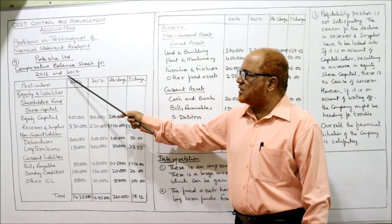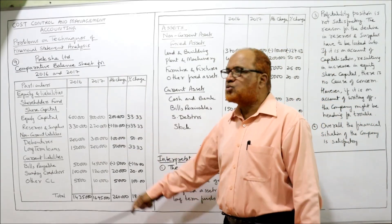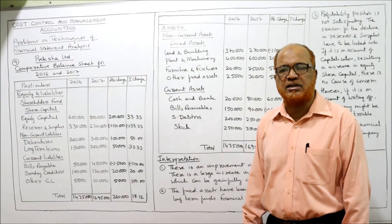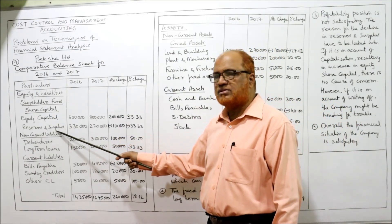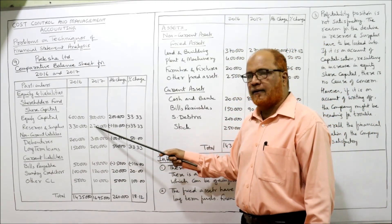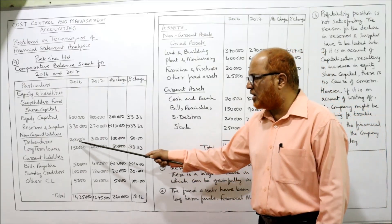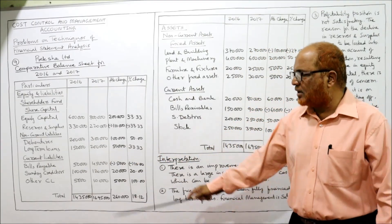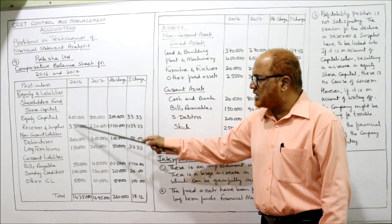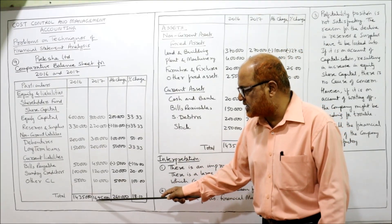Bills payable, sundry creditors, and other current liabilities go under current liabilities. Land and building, plant and machinery, furniture and fixtures, and other fixed assets go under non-current fixed assets. Cash and bank, bills receivable, sundry debtors, and stock go under current assets. Last year is 2016 and current year is 2017. The comparative balance sheet for Preksha Limited is prepared. The total of liabilities for last year is 14,35,000 and for the current year is 16,95,000.